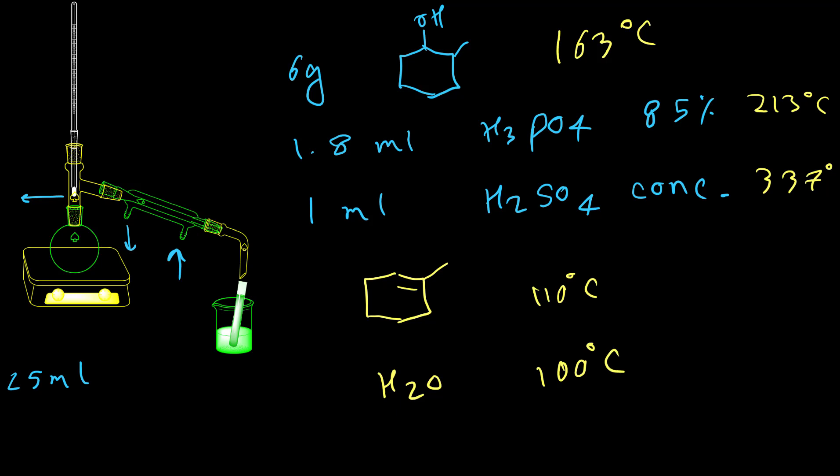So when the system starts boiling, at the beginning, the first compound that is coming should be water. We're not supposed to collect water. Removing water from the system by this way helps us to shift the reaction to the right according to Le Chatelier's principle because we're removing water from our equilibrium. When the thermometer shows 101°C, it means water is finished. Then we need to start to collect everything coming after 101°C.